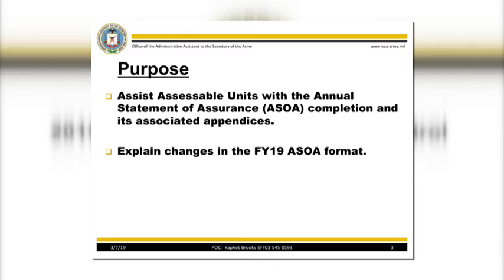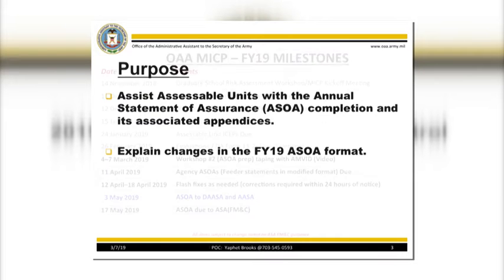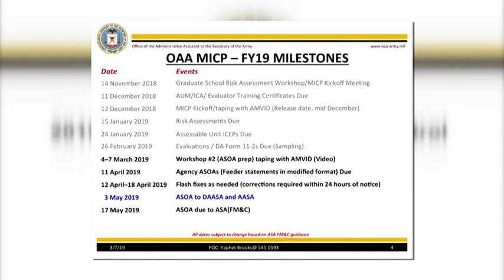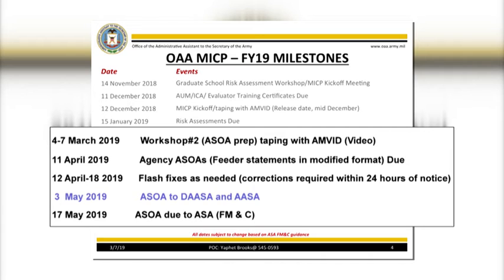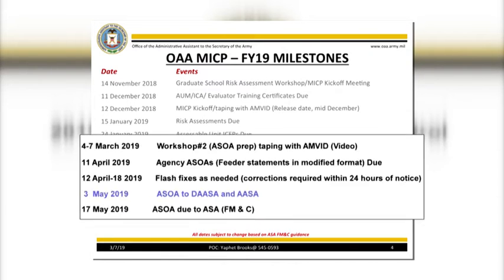This briefing is designed to assist accessible units with completing the Annual Statement of Assurance, ASOA, and its associated appendices, as well as explain changes in the FY19 ASOA format. Please review the remaining requirements for the FY19 reporting period. The ASOA is the last formal requirement of the FY19 MICP reporting period.